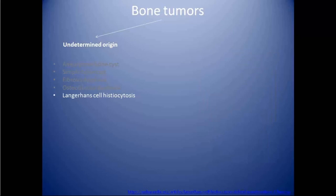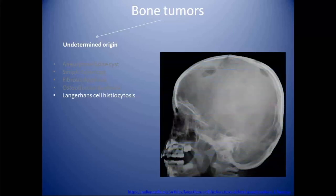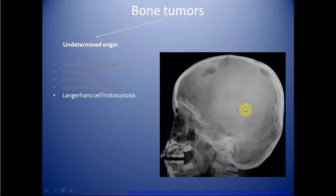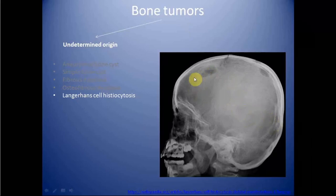Next is Langerhans cell histiocytosis, which is a rare multi-system disorder seen in young children. These lesions generally affect the axial skeleton. In the skull, the lesions are multiple punched-out defects with beveled edges, also described as geographic skull. It can cause collapse of the vertebral body, leading to vertebra plana.